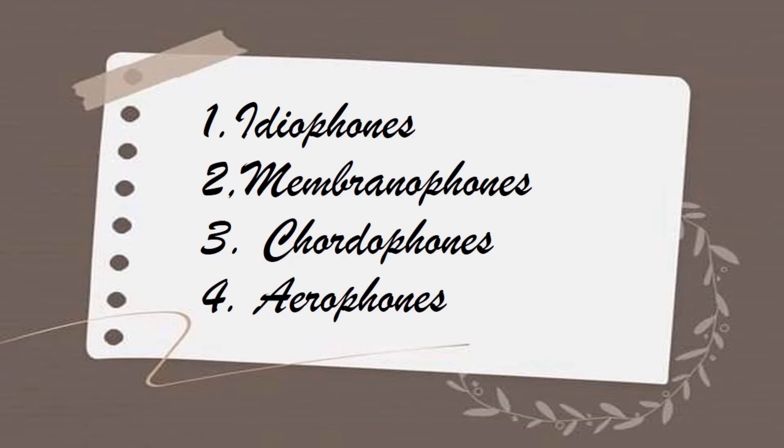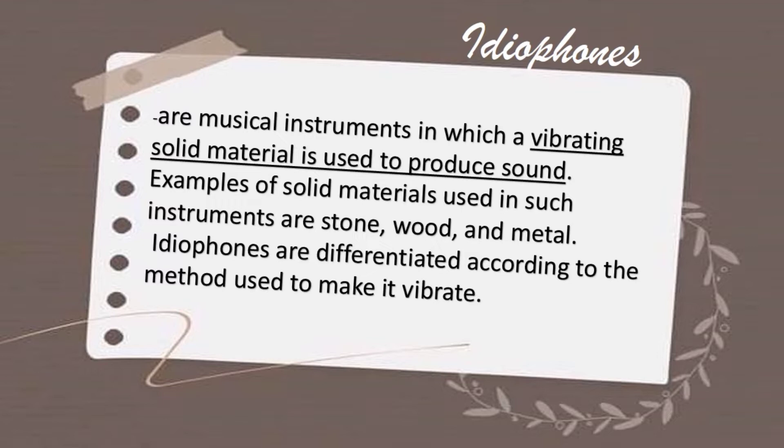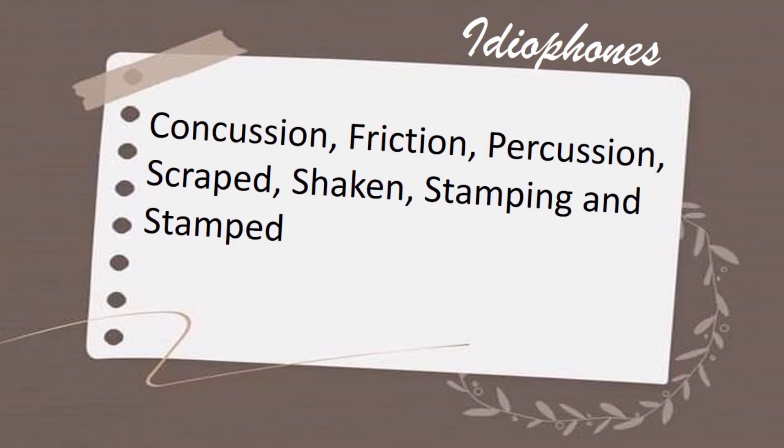First is idiophones. Idiophones are musical instruments in which a vibrating solid material is used to produce a sound. Examples of solid materials are stones, wood, and metal. Idiophones are differentiated according to the method used to make them vibrate. Take note: these instruments use vibrating solid materials to produce sound. Playing methods include concussion, friction, percussion, scraped, shaken, or stamping.